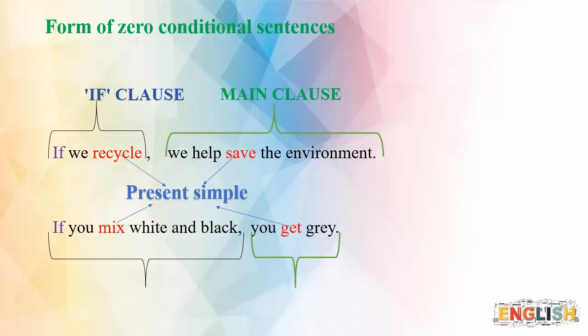Another example: 'If you mix white and black, you get gray.' Here 'if you mix white and black' is the if-clause, and 'you get gray' is the main clause, separated by a comma. Remember, in both examples we use the verbs in present simple only.